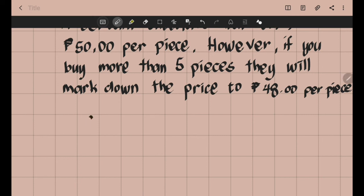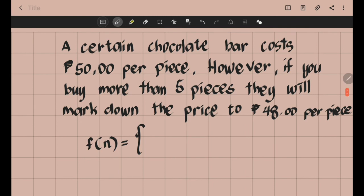Let us have f of n equals our first formula, which is if you buy chocolate bars between 0 and 5, you will pay 50 pesos each. So 50 multiplied by the number of chocolate bars if you will buy a number of chocolate bars that is greater than 0 or less than or equal to 5.